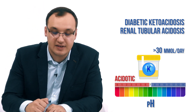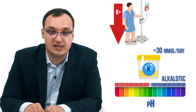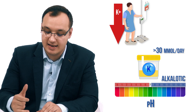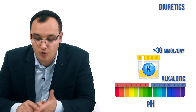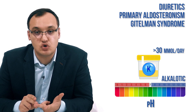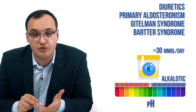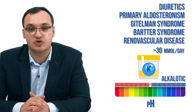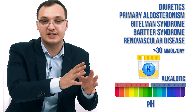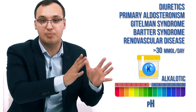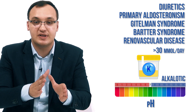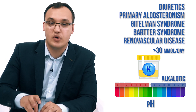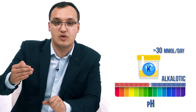If instead there is alkalosis together with high urine potassium, it can be diuretics, primary aldosteronism, Gitelman syndrome, Bartter syndrome, or renal vascular disease. So all these cases share low potassium in the blood and high potassium in the urine, but they are distinguished by alkalosis.